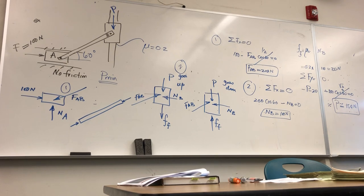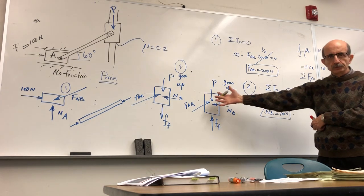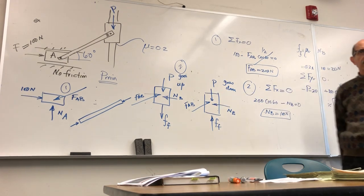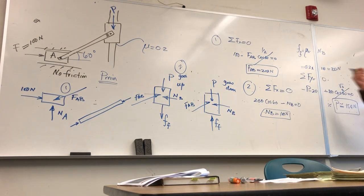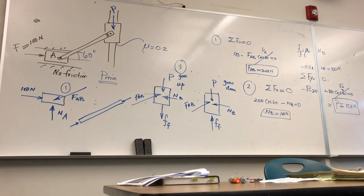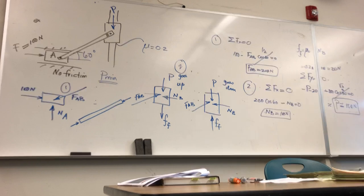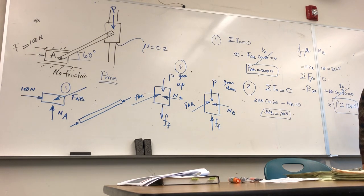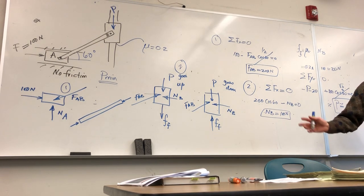Using the other free body diagram — where the piece goes down instead — P would be larger. So the value found (approximately 154 Newton) is the minimum force required.